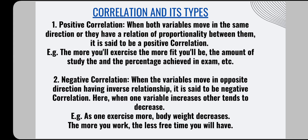Next is negative correlation. For example, as one exercises more, body weight decreases. When you do more cardio, your body weight decreases — so that's a negative correlation. The increase in one variable causes a decrease in another variable. Another example: the more you work, the less free time you will have. These two variables also have a negative relationship between them — that is also an example of negative correlation.